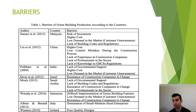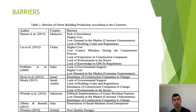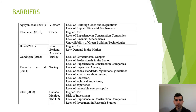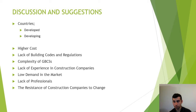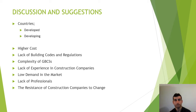This table explains the barriers for different countries. In the literature, there were both developing and developed countries, each with different and similar barriers. The most common barrier to green building production and implementing green building certification systems is higher cost — it is the most important barrier overall.